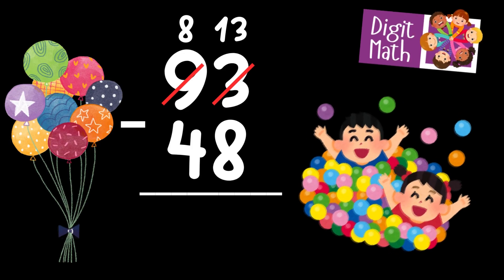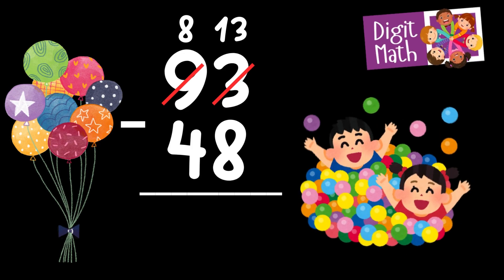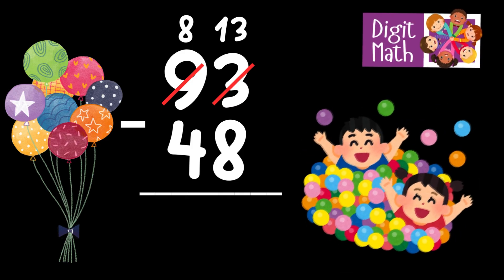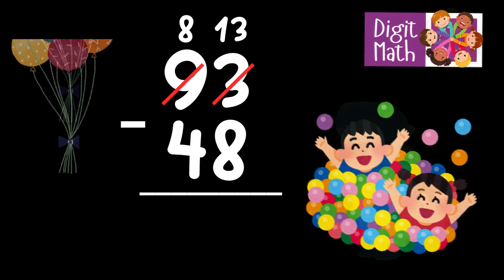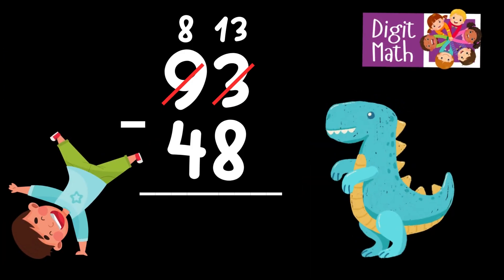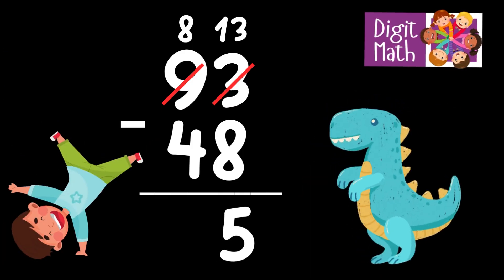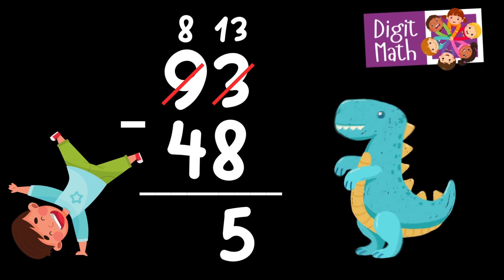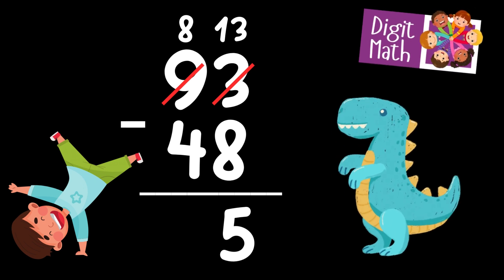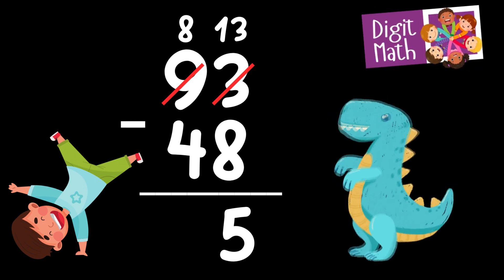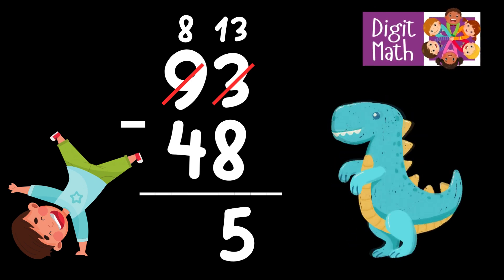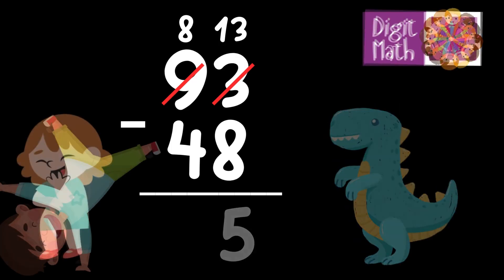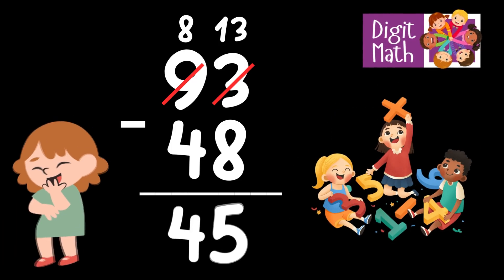Now we have 13 in the Units column. Subtract 8 from 13, which equals 5. In the Tens column, we now have 8. Subtract 4 from 8, which equals 4. So the final result is: 93 minus 48 equals 45.